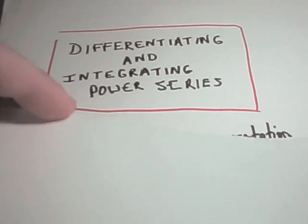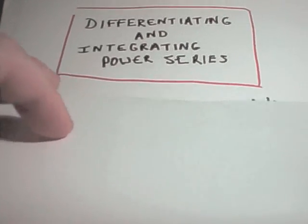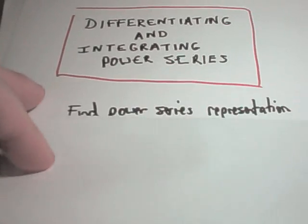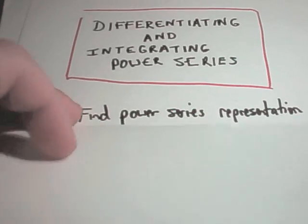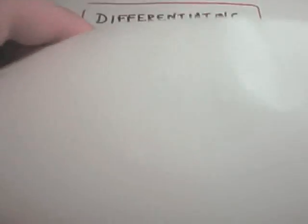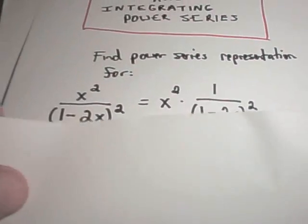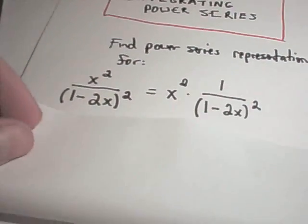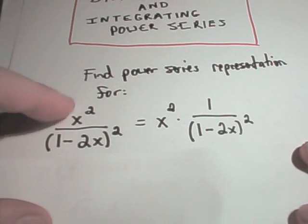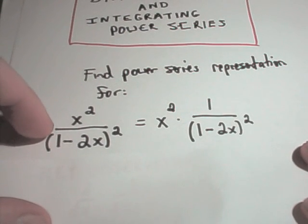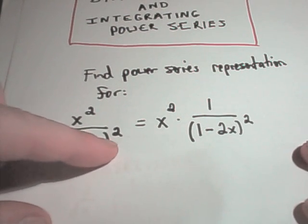The idea is, if you know a power series, you can manipulate it to come up with a different power series representation of another function. We're going to start off here finding a power series representation for the function x squared divided by 1 minus 2x squared.